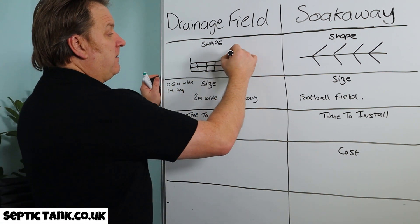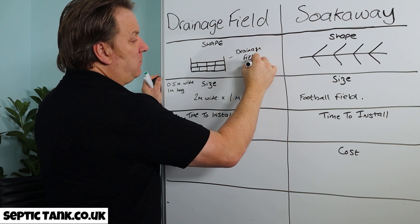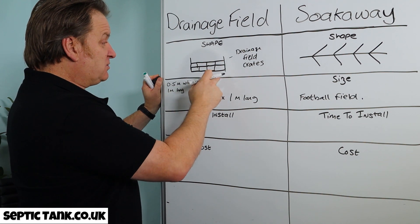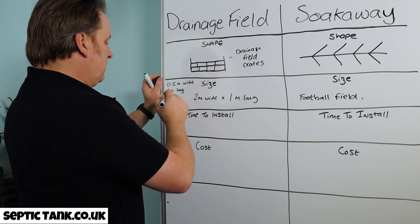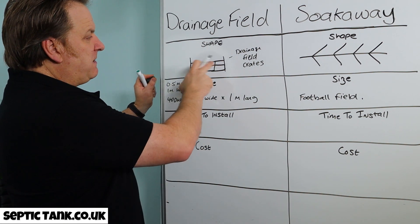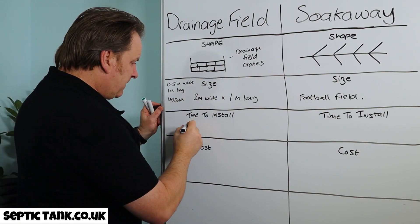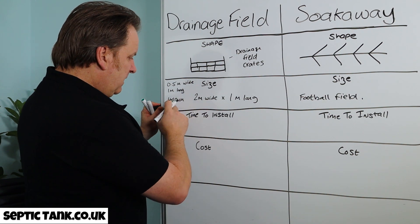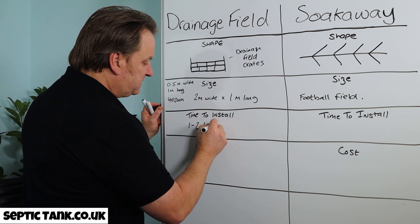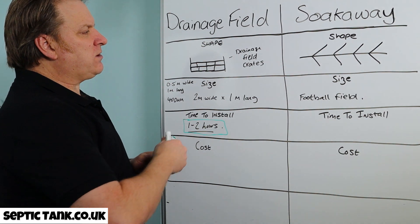How long does it take to install a drainage field with drainage field crates? The crates are 400 millimetres deep. In many cases you can have a single level — I've stacked them up here just for illustrative purposes — but typically you're looking at about 400 mil deep. How long does it take to dig that? About one to two hours. That's the time it takes to install drainage field crates.